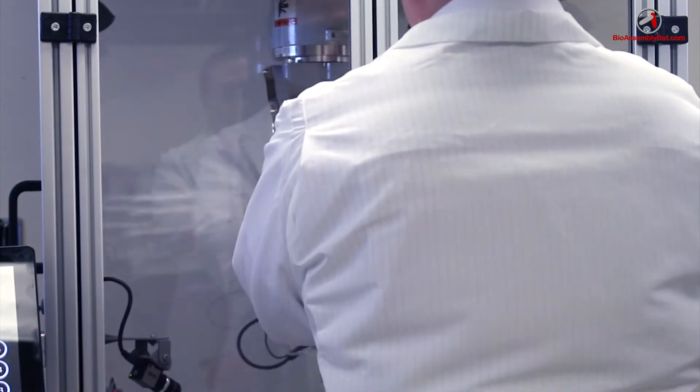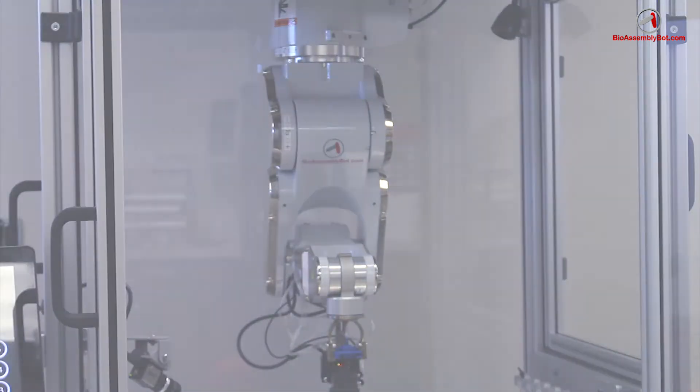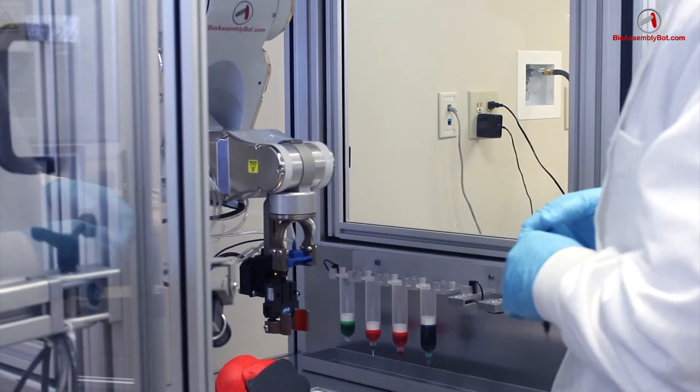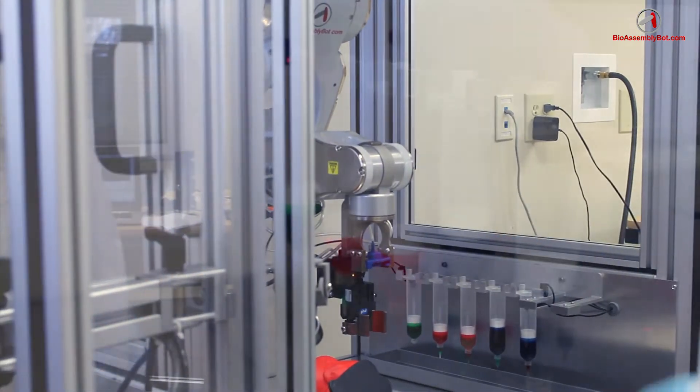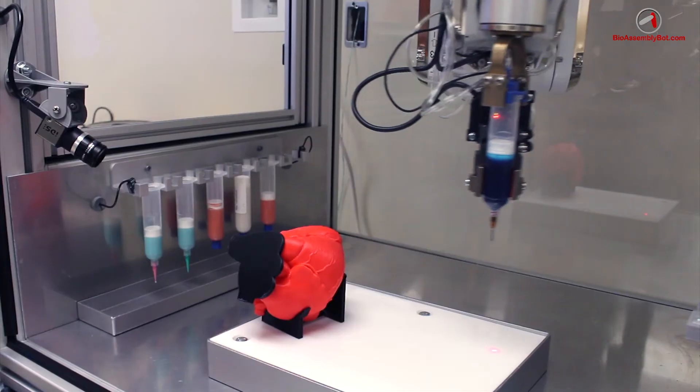Before printing, we'll load in material to represent the vascular tree in two different cartridges, with each cartridge containing a different diameter needle representing the two different calibers of vessels that will be printed in the tree, here shown in blue.